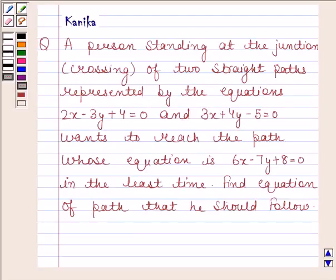Hi, let us discuss the following question. The question says a person standing at the junction crossing two straight paths represented by the equations 2x minus 3y plus 4 equals 0 and 3x plus 4y minus 5 equals 0 wants to reach the path whose equation is 6x minus 7y plus 8 equals 0 in the least time. Find equation of path that he should follow.